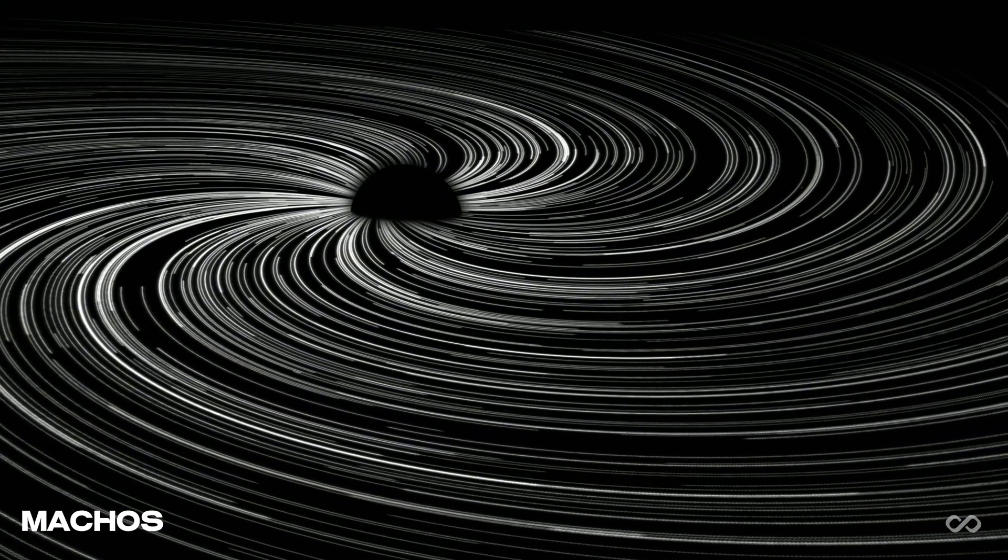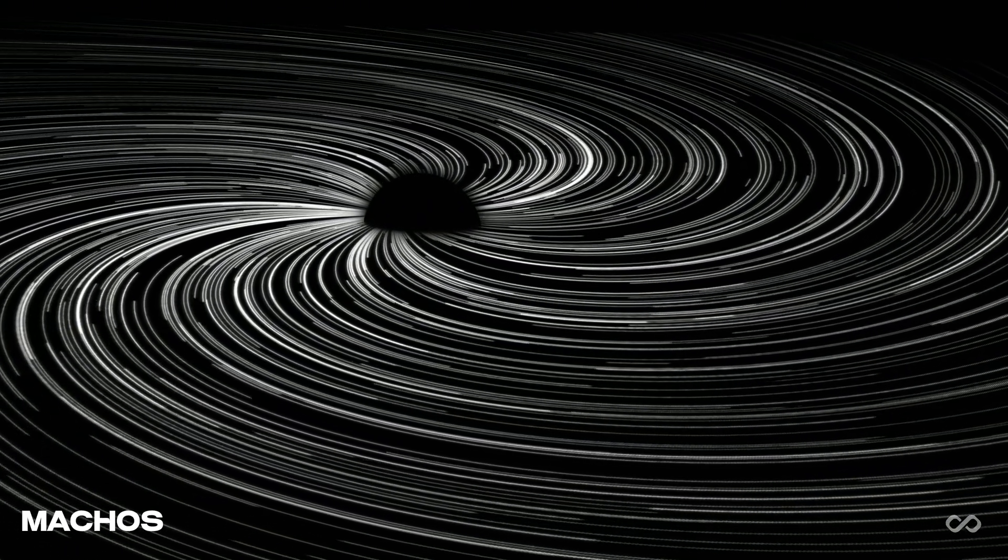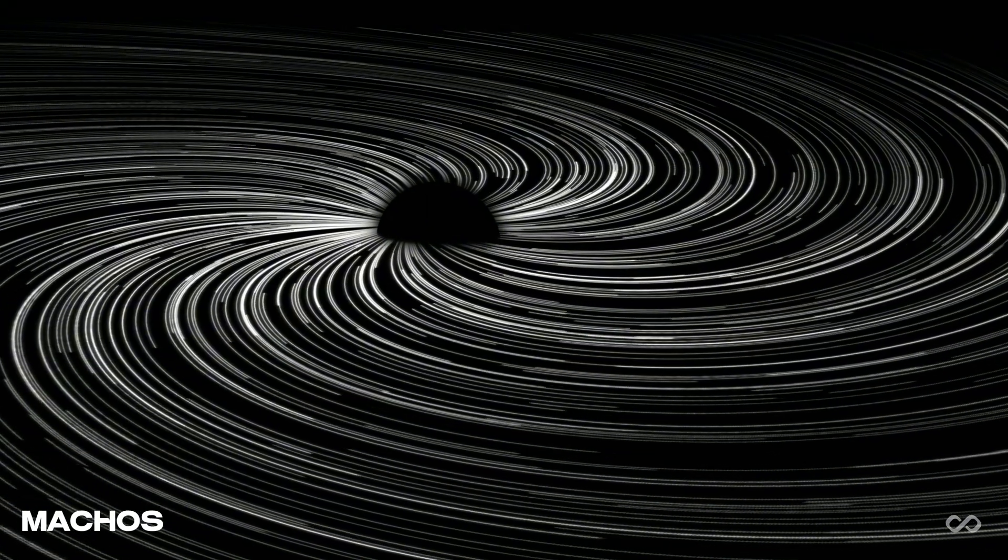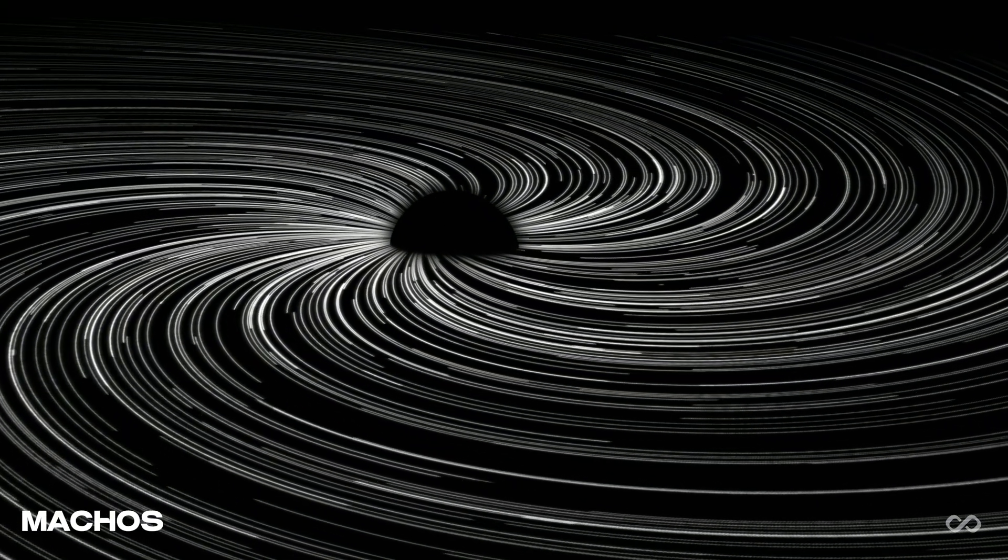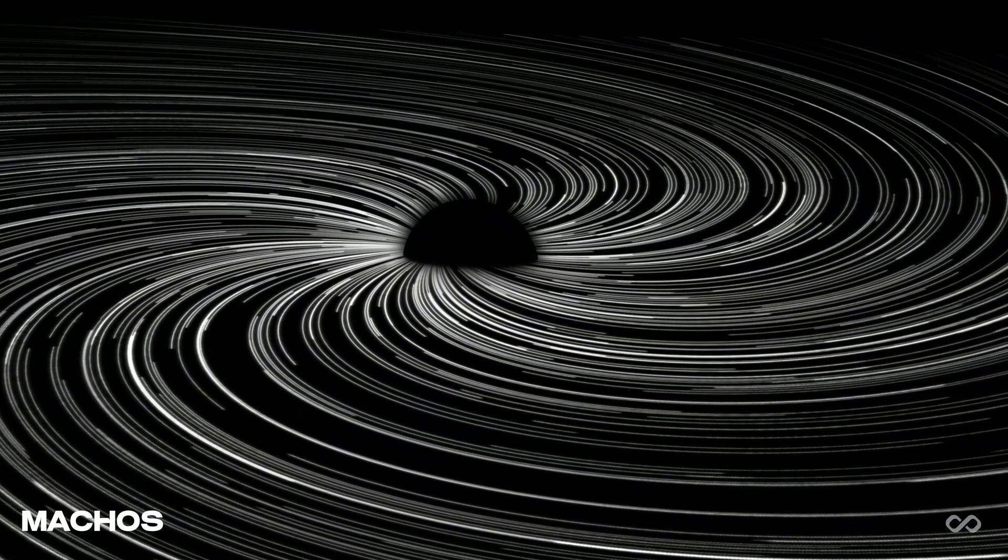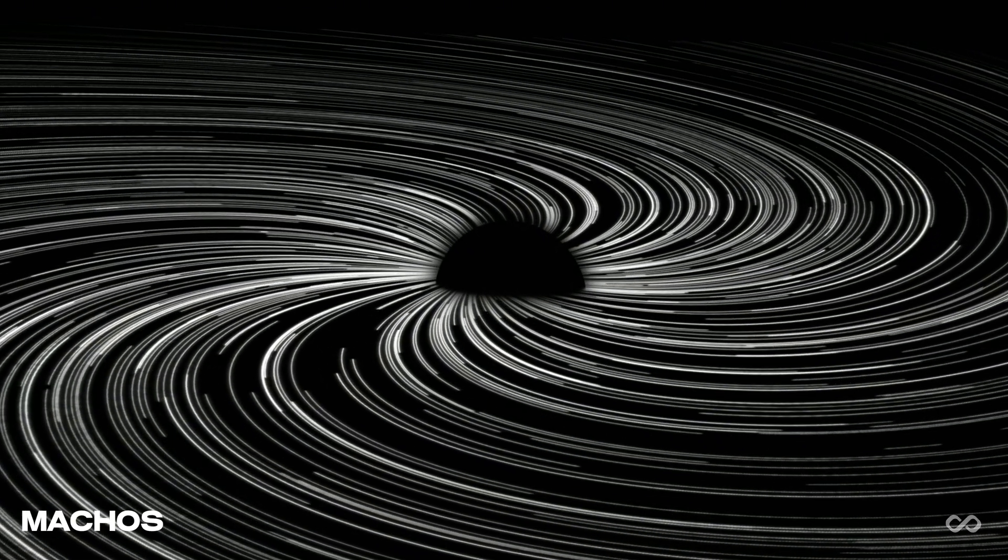Some scientists look to MACOs, massive compact halo objects, like black holes, neutron stars, or brown dwarfs. Real objects that don't give off much light, but they don't account for enough mass to solve the mystery.